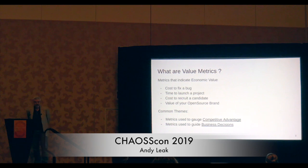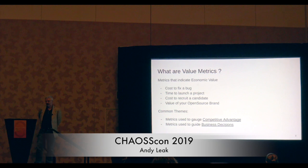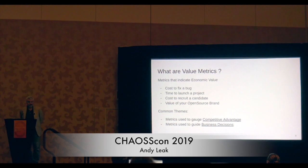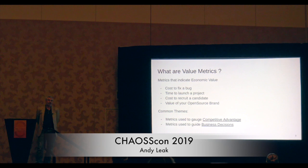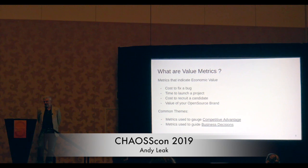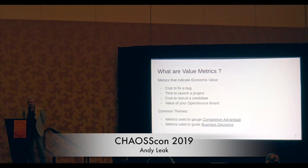When we talk about economics, primarily we're talking about financial metrics — things like cost to fix a bug, time to launch a project. Project velocity has very much of an economic component across a whole ton of business domains. Recruiting is a recurring theme; open source for business certainly has relevance to recruiting. People are using open source to build brands — Red Hat just had a mighty acquisition, tremendous brand value there.